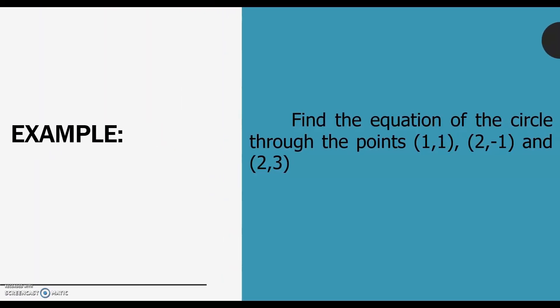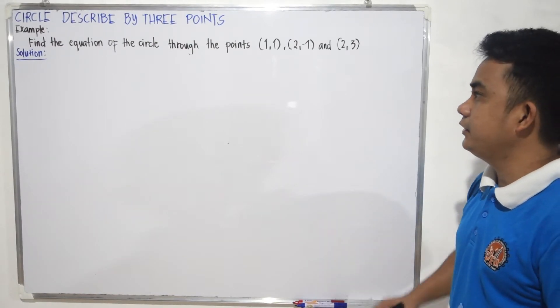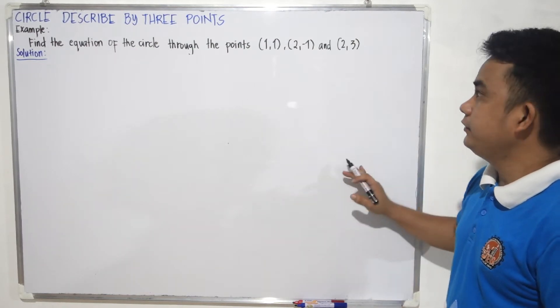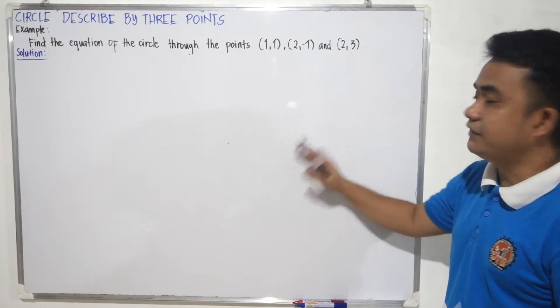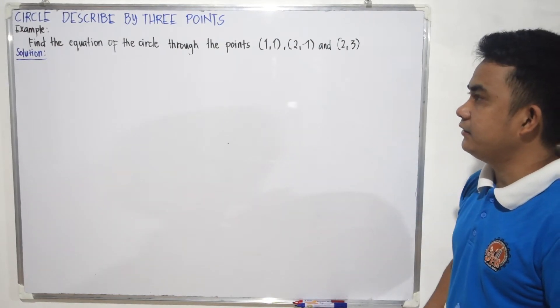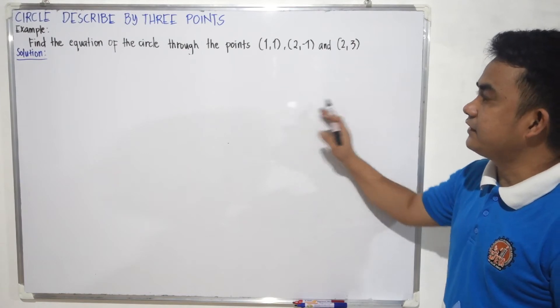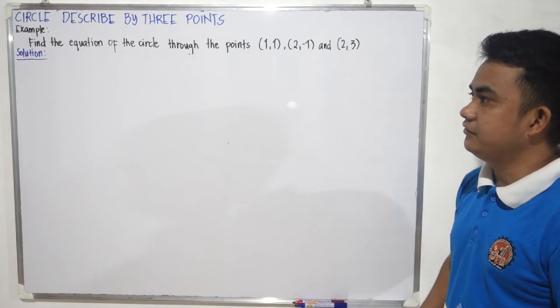For our example, find the equation of the circle through the points (1, 1), (2, -1), and (2, 3). These three points are located along the circumference of the circle. Since they are located on the circumference, they must satisfy the general equation of the circle, which is x squared plus y squared plus dx plus ey plus f equals 0. What we need to find are the values of d, e, and f.